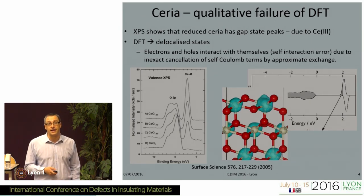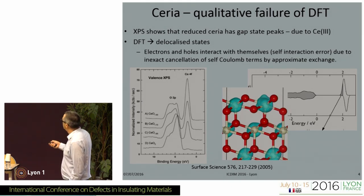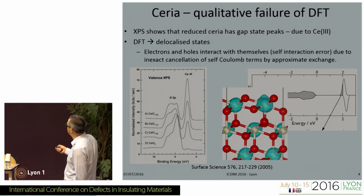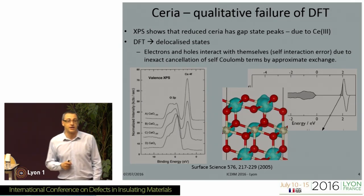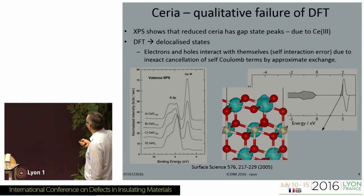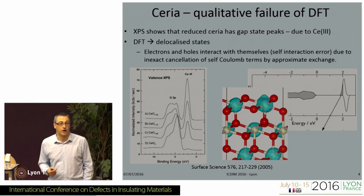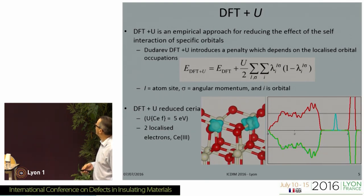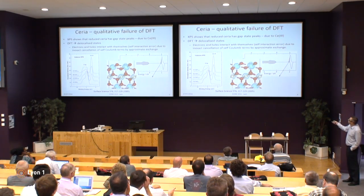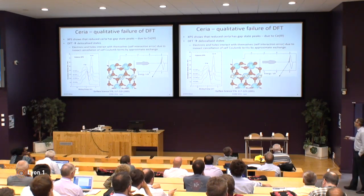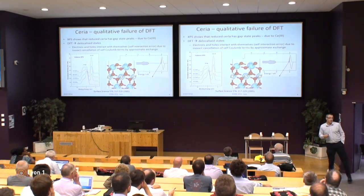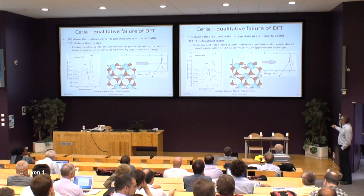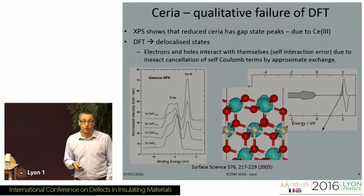If you try to model that in standard density functional theory, you won't get very far. Here's an XPS spectrum showing that as you reduce the cerium dioxide, you get the introduction of this cerium 4F state in the band gap. If you apply standard DFT to a (1×1×1) surface with an oxygen vacancy, you simply get a delocalized mess in terms of where the electrons are. In the density of states, you see just occupation at the top of the conduction band. That is to do with the self-interaction error in DFT — where essentially an electron, or in fact a whole state, will interact with itself due to the inexact calculation of the self-Coulomb term by the approximate exchange in DFT.